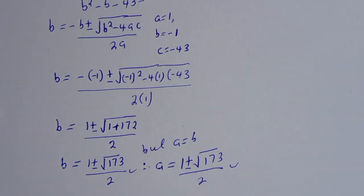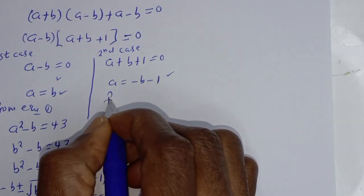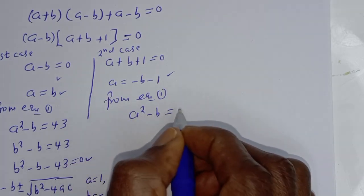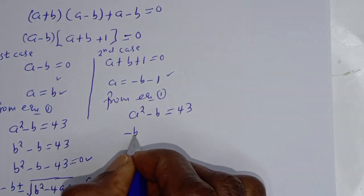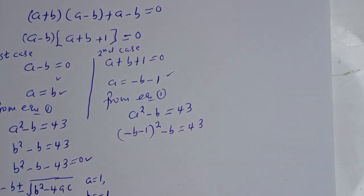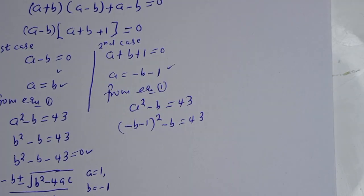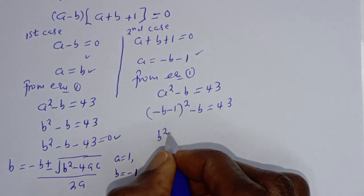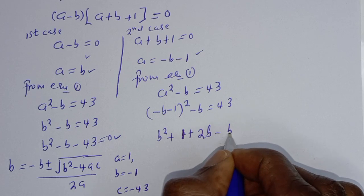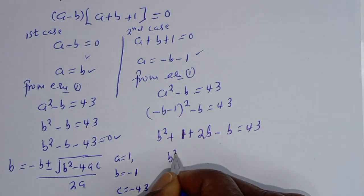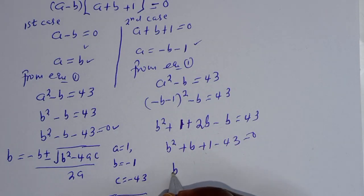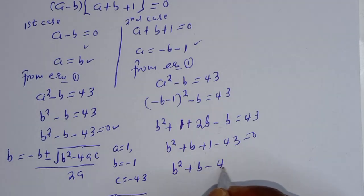Now let's consider the second case. From equation 1, A squared minus B is equal to 43. Substituting A equals minus B minus 1, we have (minus B minus 1) squared minus B is equal to 43. Expanding: B squared plus 1 plus 2B minus B plus 1 minus 43 is equal to 0.